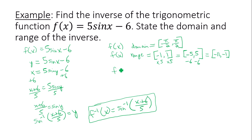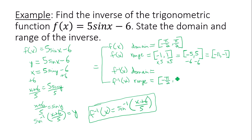For the domain and range of the inverse: the domain of the original equals the range of the inverse, so the range of the inverse is -π/2 to π/2. The range of the original equals the domain of the inverse, so the domain of the inverse is -11 to -1. This answers the question — we have the inverse trig function and the domain and range of both the original and inverse.